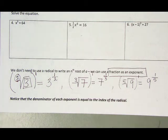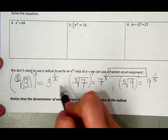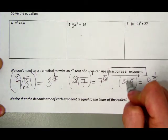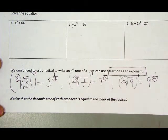Notice that your denominator of each exponent is equal to the index of the radical. Alright, so the twos match up, your index and your denominator match up here, and your index and your denominator match up here.